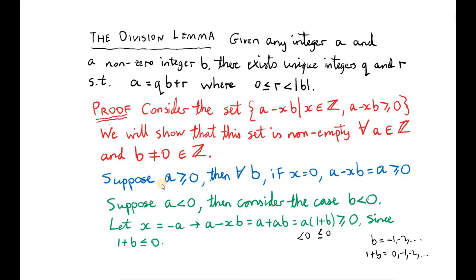We have to consider a few cases. Let's first take the case where a is non-negative. If a is non-negative, it doesn't matter what b is. If we choose x to be 0, we get the integer a minus xb, which is just a, which is greater than or equal to 0. So in the case where a is greater than or equal to 0, for all b, we've found an element of the set.